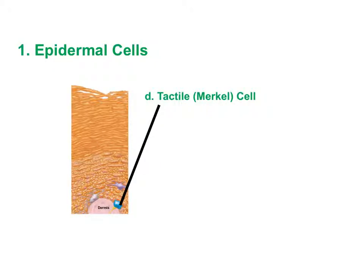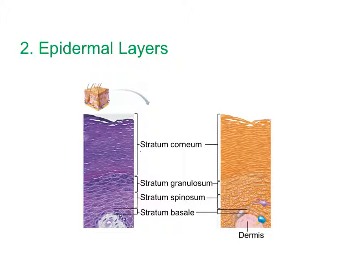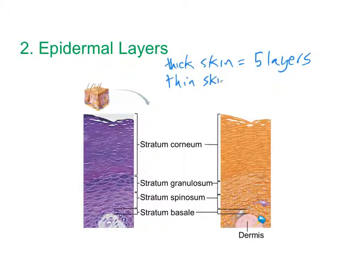The fourth type of cell are tactile cells or Merkel cells, which are sensory receptors for touch. Now we need to talk through the layers of the epidermis. Thick skin, found on the palms of your hands and soles of your feet, has five layers, while thin skin found on most of the rest of the body has four layers. The term 'stratum' means layer.